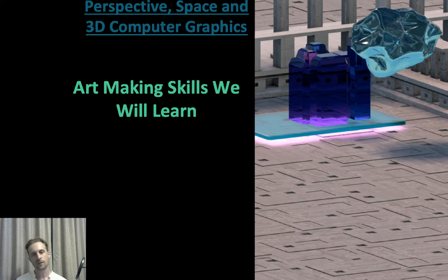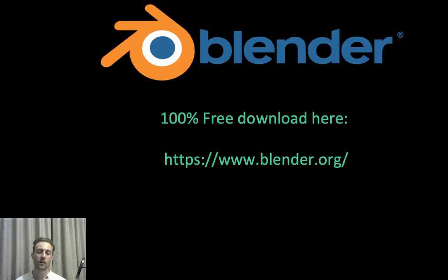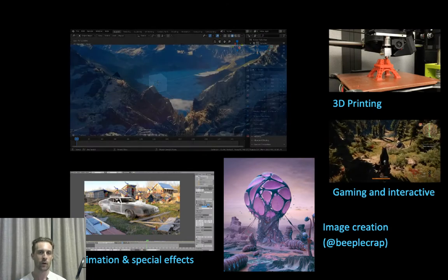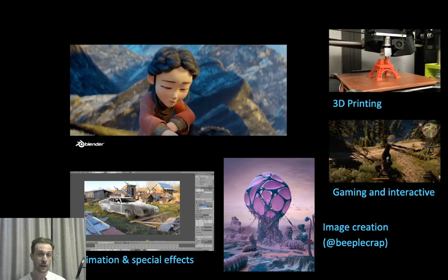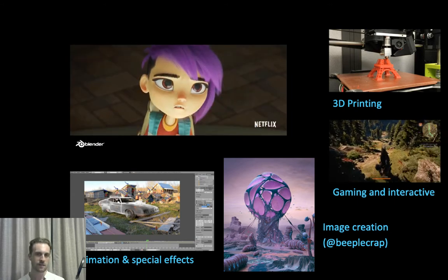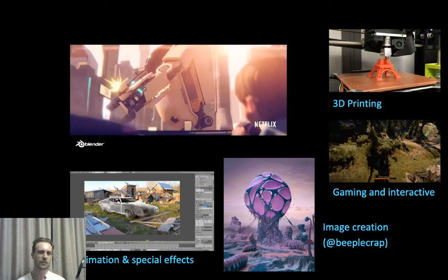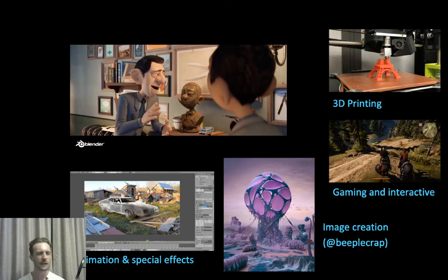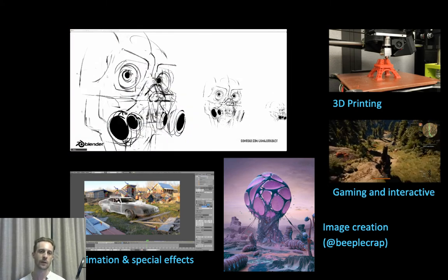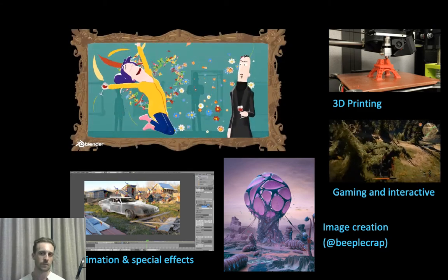So in this course, first of all, I want to talk to you about the art making skills that we're going to learn. This course has a practical and a theoretical component. We're going to work almost exclusively in the software Blender. Blender is a piece of 3D software — it's open source, it's free for you to download, and it works on both Mac and PC. Blender can make all sorts of things: components for computer games, things for 3D printing, animation special effects, photo realistic special effects, cartoon special effects, and also high quality images.